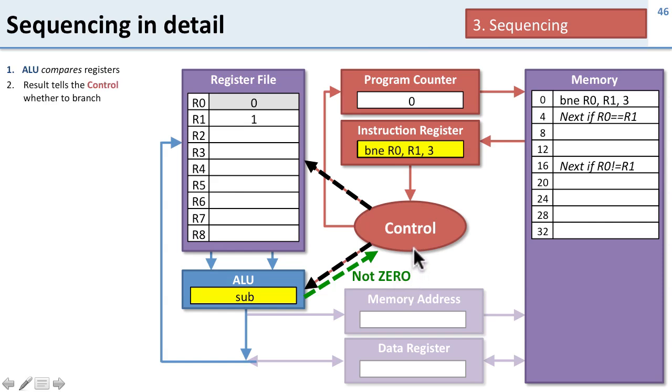This result tells the control whether to branch. This is branch if not equal, and they're not equal, so the control tells the program counter to go to the right instruction. The branch is taken and the control updates the program counter to the right location.